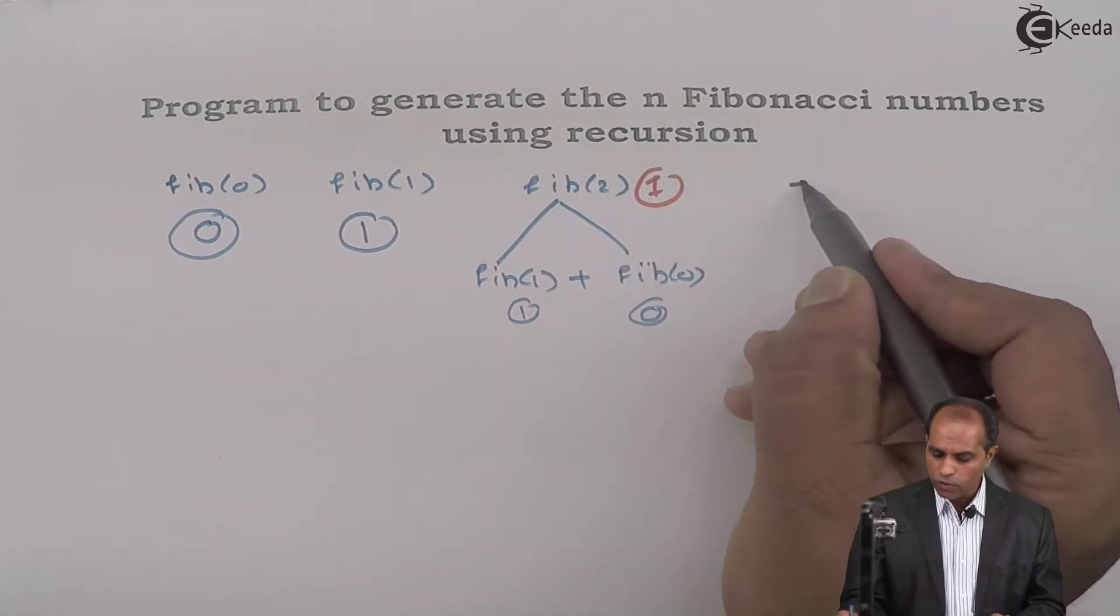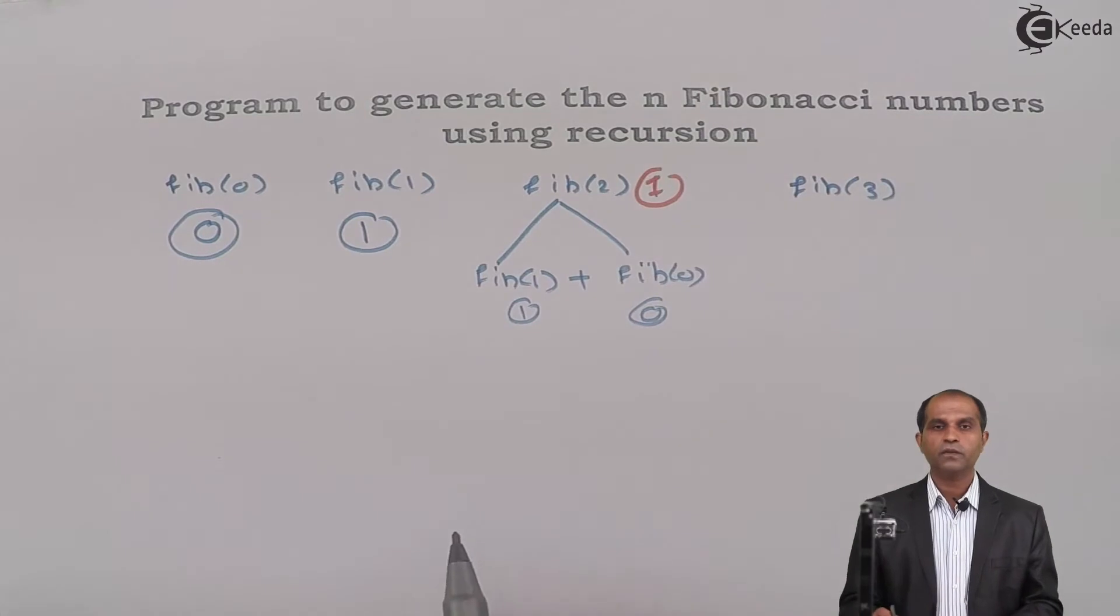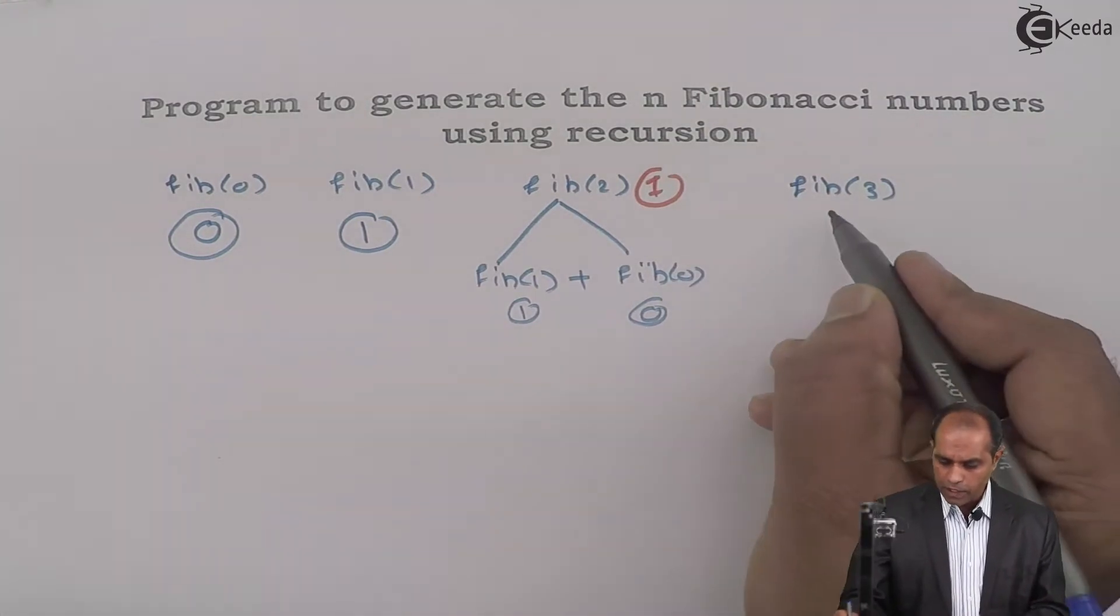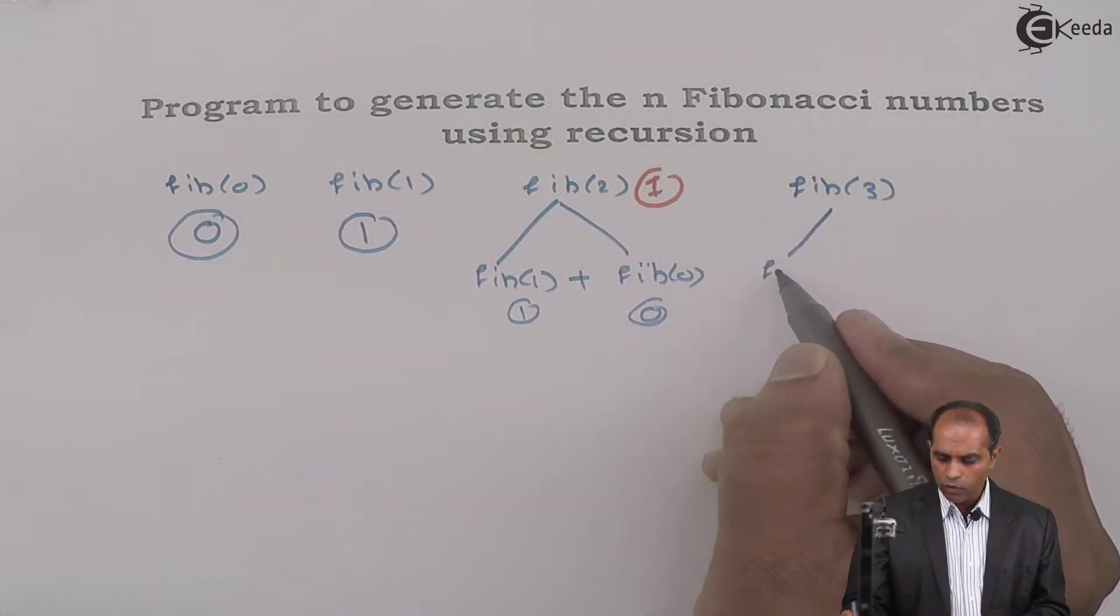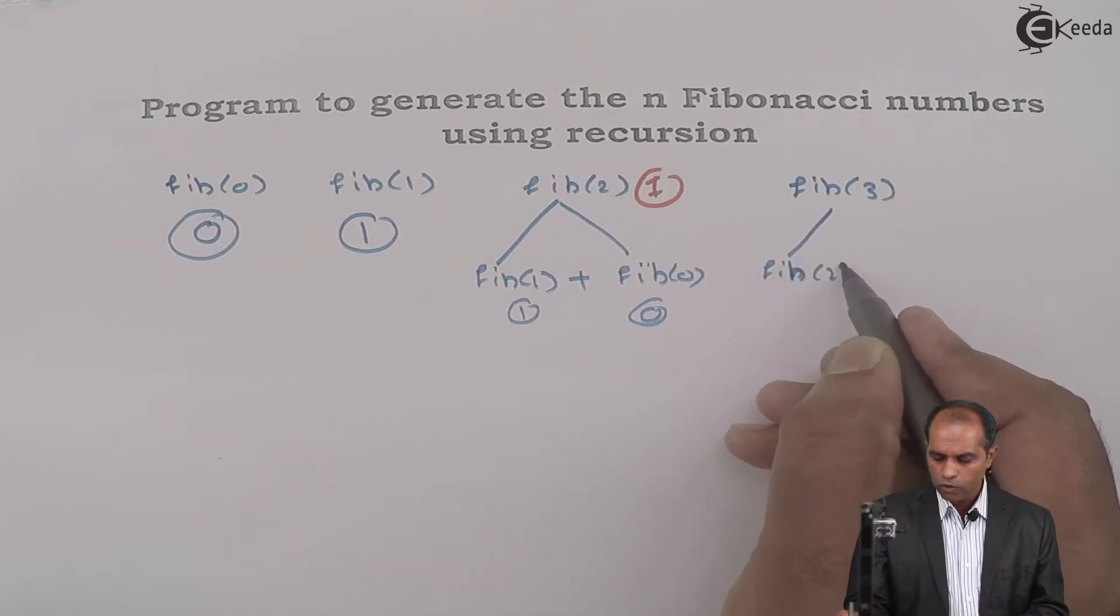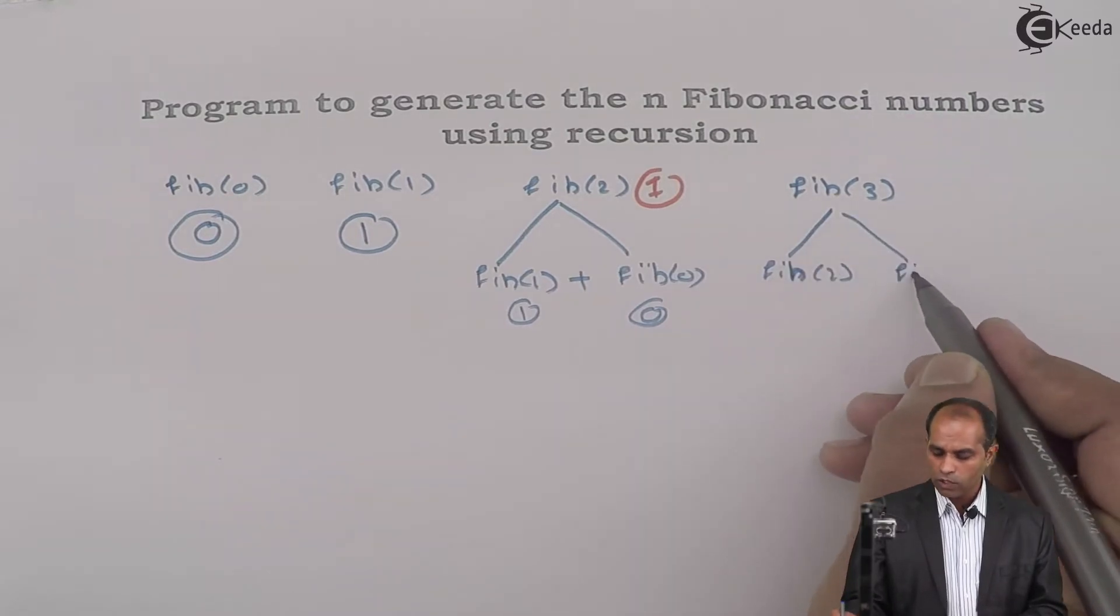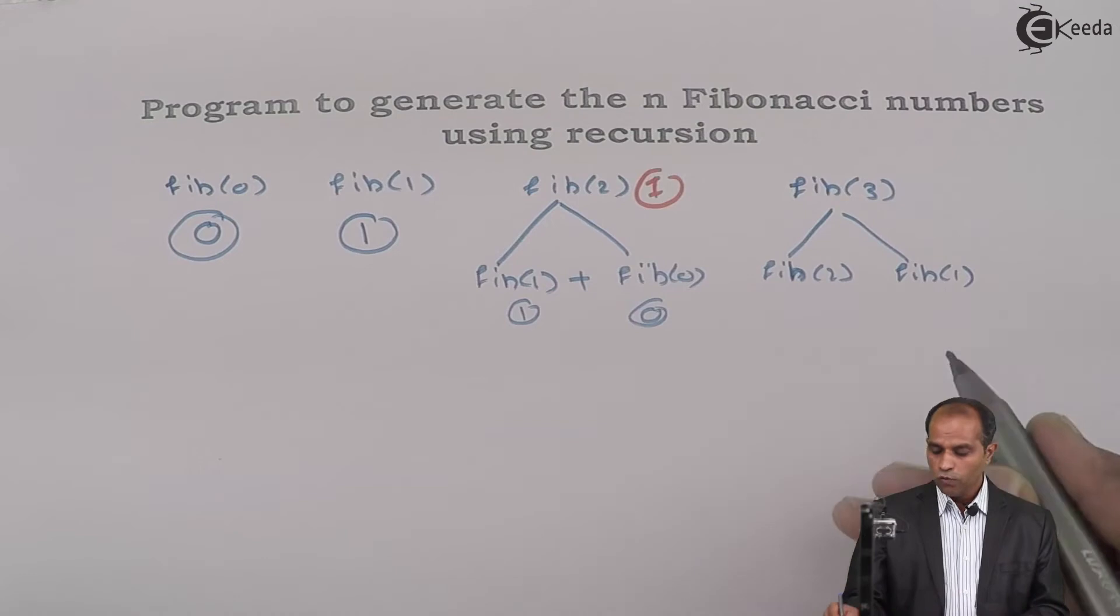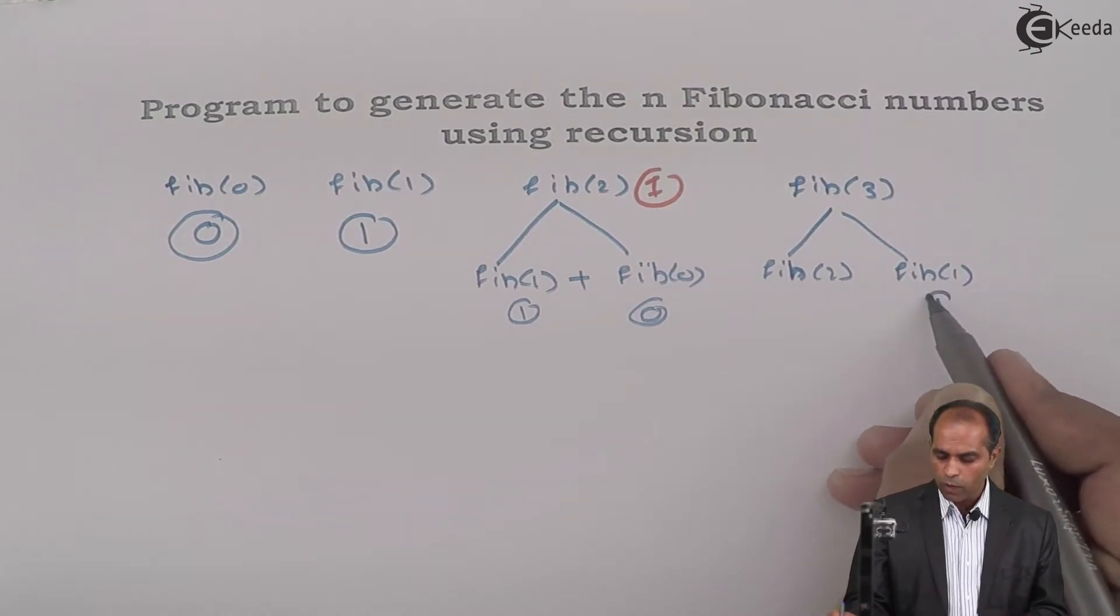What if I ask you to find the third Fibonacci number, Fib of 3? When Fib of 3 is given, you will say that I know what is Fib of 2 and what is Fib of 1. Fib of 1 can be obtained directly. Fib of 1 is 1.